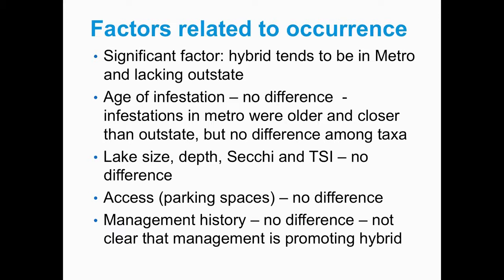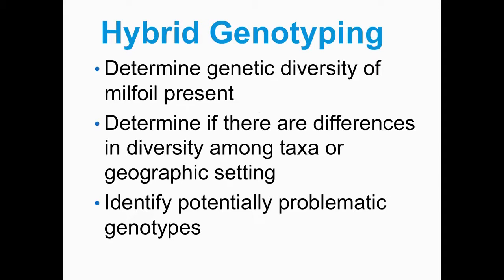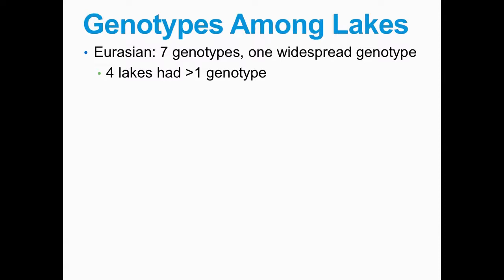Next we looked at hybrid genotyping — what is the genetic structure? Are these from the same parents or totally unrelated? For Eurasian water milfoil, we found only 7 genotypes; one was widespread and common in almost all lakes that had Eurasian water milfoil, with only four lakes having more than one genotype — very limited diversity. In contrast, native northern water milfoil had 96 genotypes: every lake had a different genotype with no clonal spread across lakes, suggesting significant sexual reproduction over thousands of years.